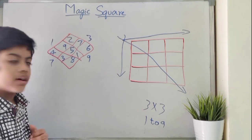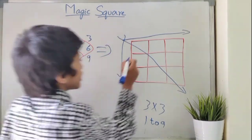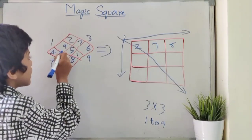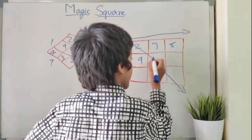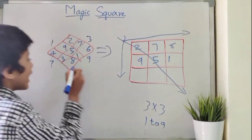Now let's arrange these numbers in a square. 2, 7, 6. 9, 5, 1. 4, 3, 8.